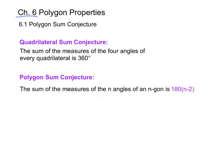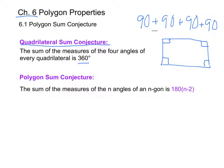We're going to start with some conjectures. The quadrilateral sum conjecture says that the sum of the measures of the four angles of every quadrilateral is 360 degrees. For example, if we have a rectangle, we know that we have four right angles. They're all going to be 90 degrees. So 90 plus 90 plus 90 plus 90 adds up to 360, which proves this conjecture.